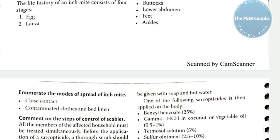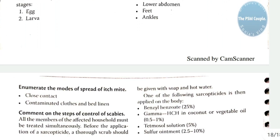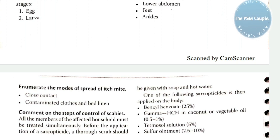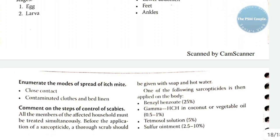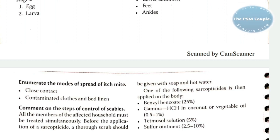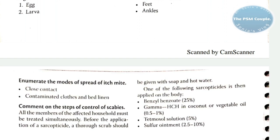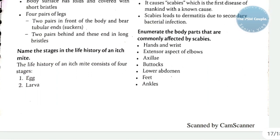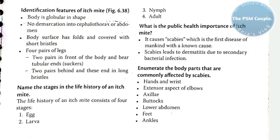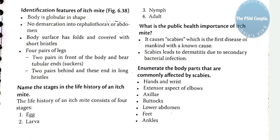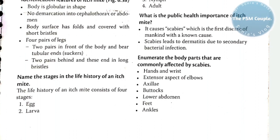Control of scabies: all members of the affected household must be treated simultaneously. Before application of a scabicide, a thorough scrub should be given with soap and hot water. Scabicides applied on the body include benzyl benzoate, gamma BHC (gamma HCH) in coconut or vegetable oil, tetmosol solution, or sulphur ointment. Stages of the itch mite are egg, larva, nymph, and adult.